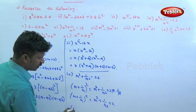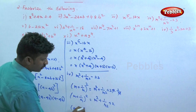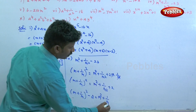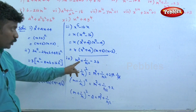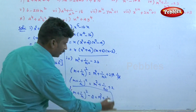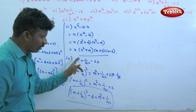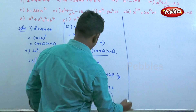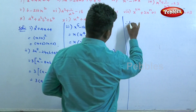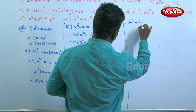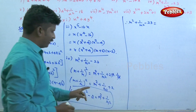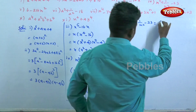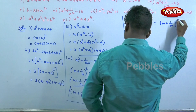Therefore m plus 1 by m whole square minus 2 equals m squared plus 1 by m squared. So substituting, m squared plus 1 by m squared minus 23 equals m plus 1 by m whole square minus 2 minus 23, which gives m plus 1 by m whole square minus 25.